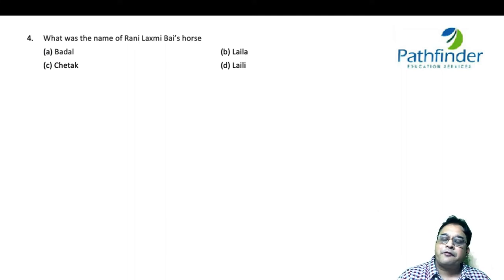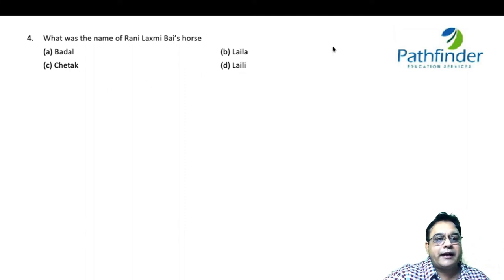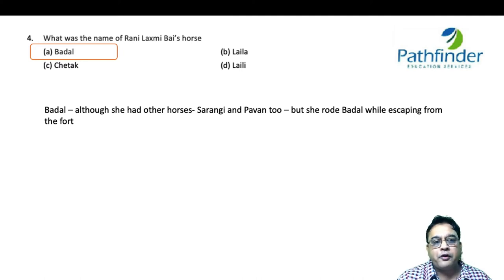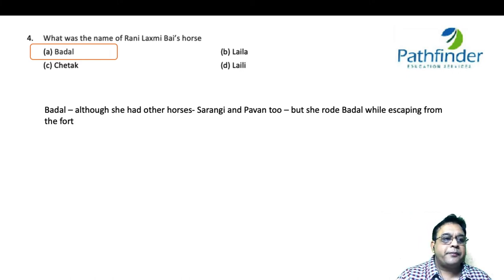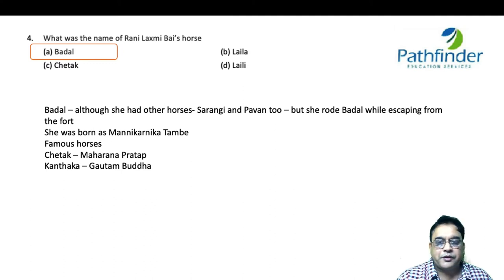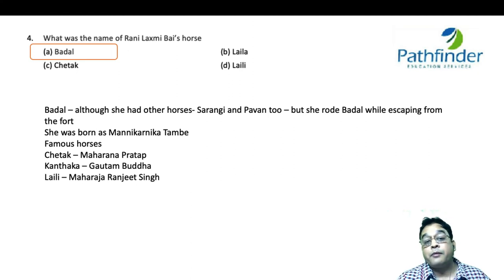What is the name of Rani Lakshmibai's horse? The options are Badal, Laila, Chetak, and Lely. The correct answer is Badal. Although she had other horses — Sarangi and Pavar — she rode Badal while escaping the fort from the British forces, ultimately leading to her death in 1858. She was born as Manikarnika Tambe. Other famous horses in history: Chetak belonged to Maharana Pratap, Kantaka belonged to Gautam Buddha, and Laili belonged to Maharaja Ranjit Singh.